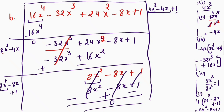So the square root of the algebraic expression 16x⁴ minus 32x³ plus 24x² minus 8x plus 1 is 4x² minus 4x plus 1.